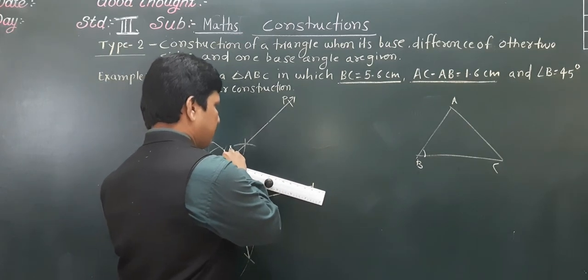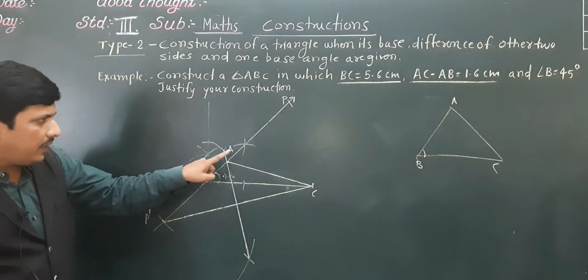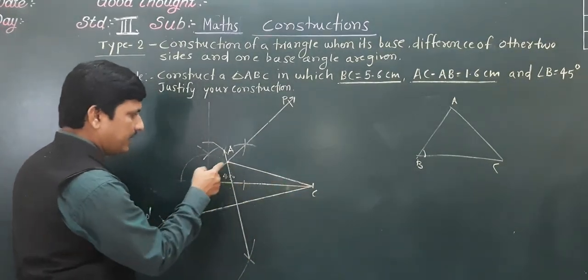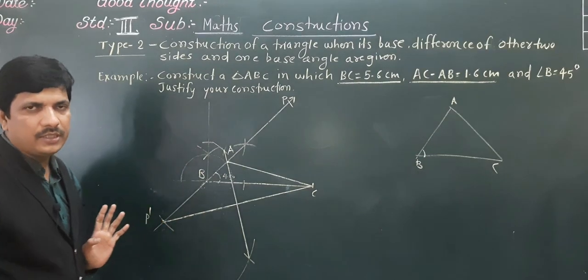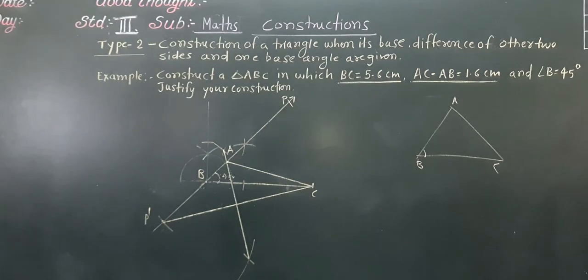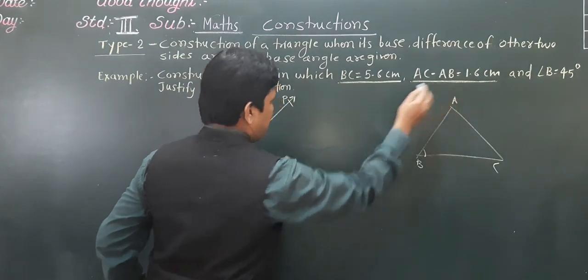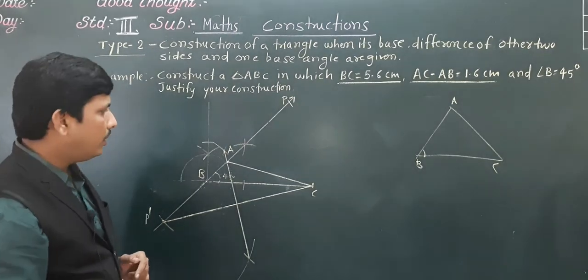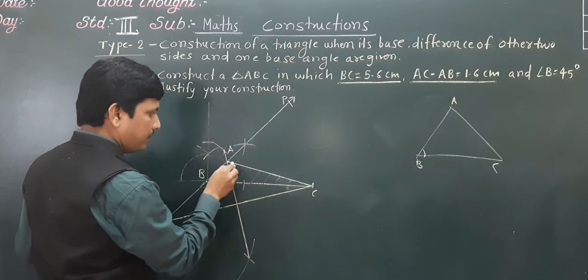When you join this, you get the required triangle ABC. If you observe, AC is greater than AB — meaning AC minus AB is equal to 1.6 centimeter. Here we need to write a justification also. According to the given data, AC minus AB, where AC is greater than AB — we need to justify it properly. This is our required triangle ABC.